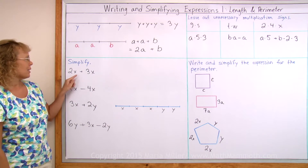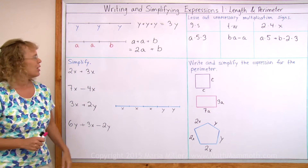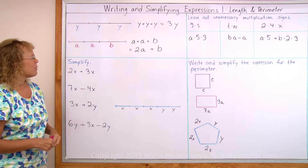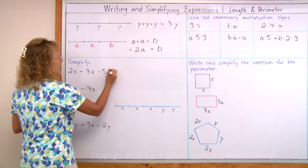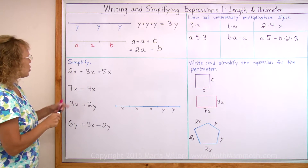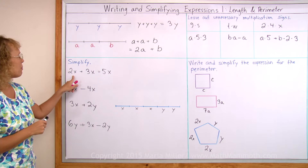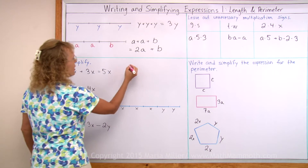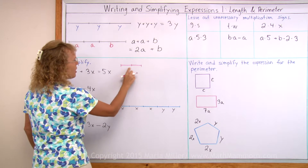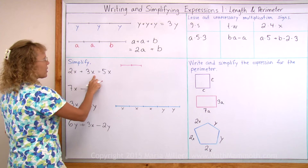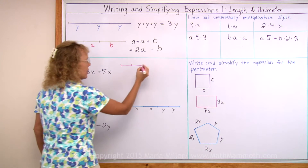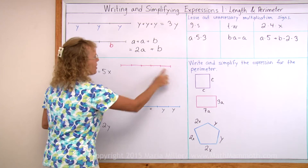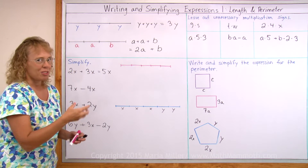Here's an expression: 2x plus 3x. You can probably guess what it will be when we simplify it — it's going to be 5x. But let me show it to you using lengths. Now 2x is a multiplication: 2 times x. But that is also an addition of x plus x. So this 2x is a length of x and another length of x. 3x would be x plus x plus x. And now in total we indeed have x plus x plus x plus x plus x, or 5 times x.